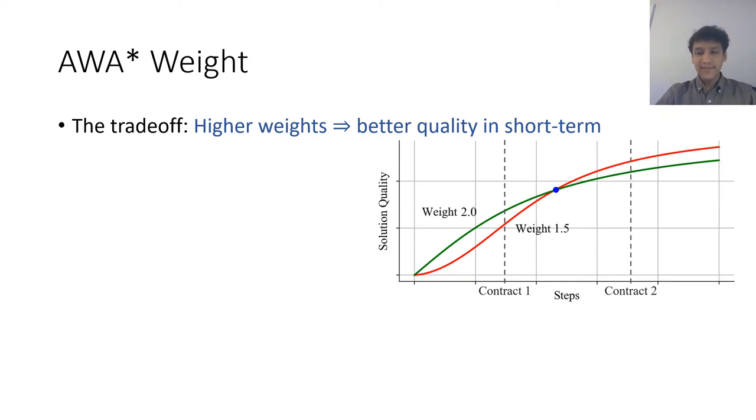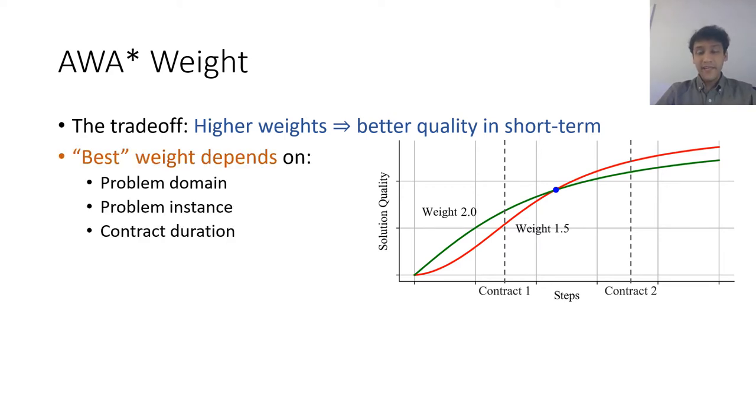This figure shows two sample executions of Anytime Weighted A star on a particular problem. This figure shows that a weight of 2 is better when the deadline is contract 1 and a weight of 1.5 is better when the deadline is contract 2. The best weight depends not just on the contract duration but normally also on the problem domain and the problem instance.